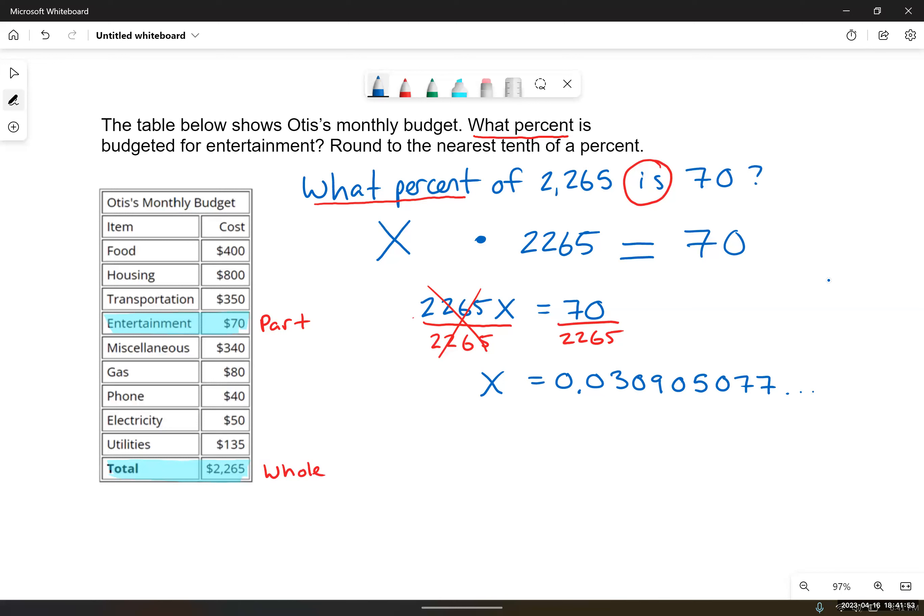All right. But the question isn't what number, it's what percent. So our answer has to be in the form of a percent. So we want to convert this X to a percent. And how do we do that? We multiply by 100. So that'll convert the decimal into a percent, which essentially moves the decimal point two places to the right. So this becomes 3.0905077. Instead of being between the two zeros, the decimal point is now between the three and the zero, and it keeps going from there. But now it's a percentage.